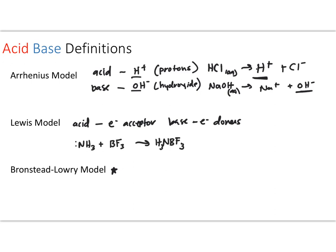An example for Lewis acid-base model would be the following. In this case, we have ammonia. The electrons here are going to be donated to the boron in this BF3, and you're going to form this compound here. So basically, your NH3 here is going to be acting as your base. It's going to be donating electrons to the acid, which is your BF3. So this is my base, this is my acid.